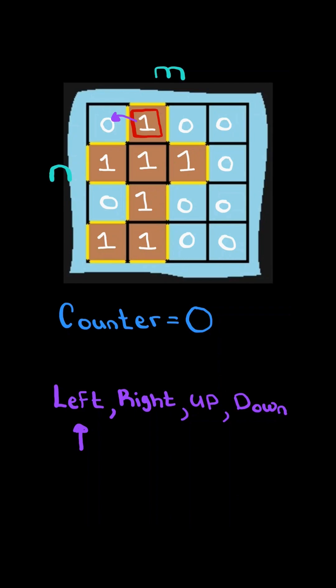If the value to the left is a zero, then we know there exists a perimeter, so we add one to our counter. Likewise, since the value to the right is also a zero, we know there exists a perimeter, so we add one to our counter.